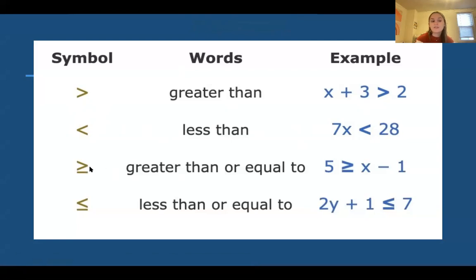But now we also have this symbol, which is the greater than one but a line underneath. That means greater than or equal to. So here we have 5 is greater than or equal to x minus 1. And lastly, we have the less than with the line under, which means less than or equal to. So here we have 2y plus 1 is less than or equal to 7.